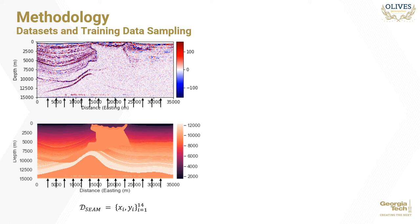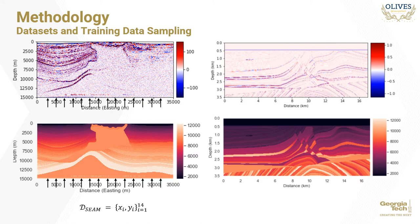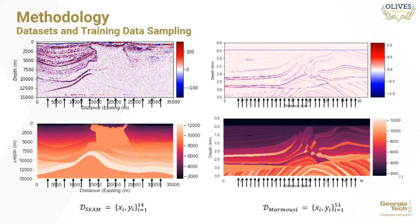The second dataset we use is the industry standard Marmousi dataset. The model is accompanied by synthetic seismic data obtained by convolutional forward modeling the acoustic impedance of the model with a seismic wavelet. Considering that this is an easier dataset, we make this our source dataset in the study and sample 51 wells from this survey as shown in the figure.